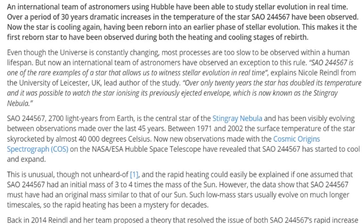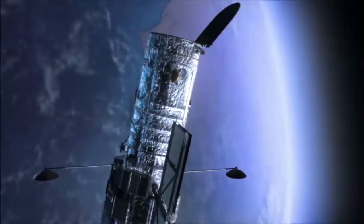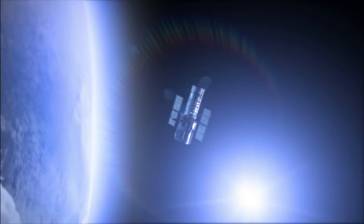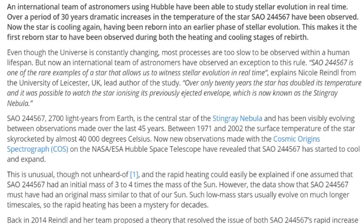An international team of astronomers using Hubble, oh, you shouldn't use the Hubble, you should be good at the Hubble. The Hubble's good to you. Have been able to study stellar evolution in real time. Over a period of 30 years, dramatic increases in the temperature of the star SAO 244-567 have been observed. Now the star is cooling again.